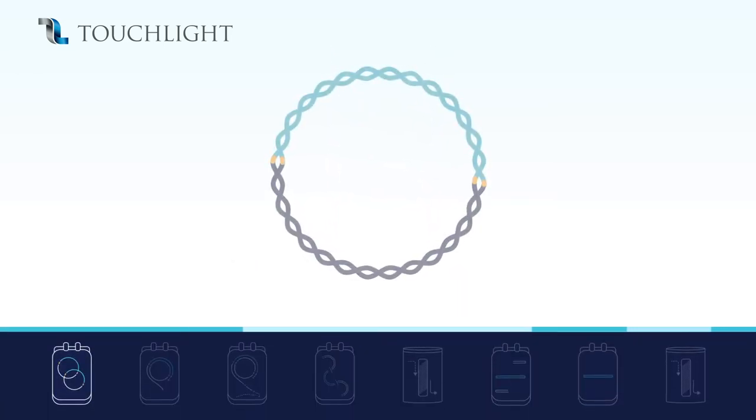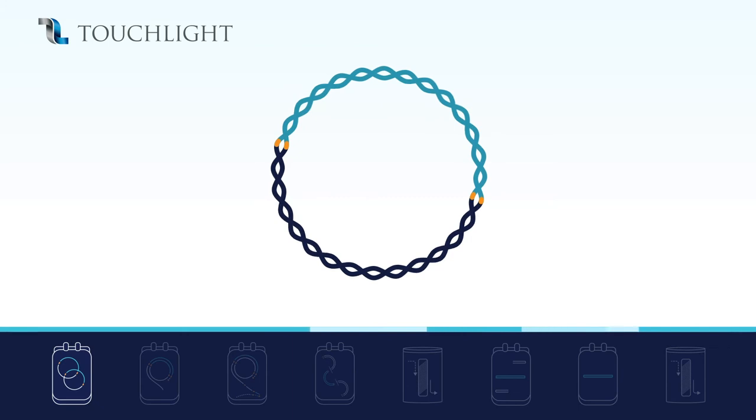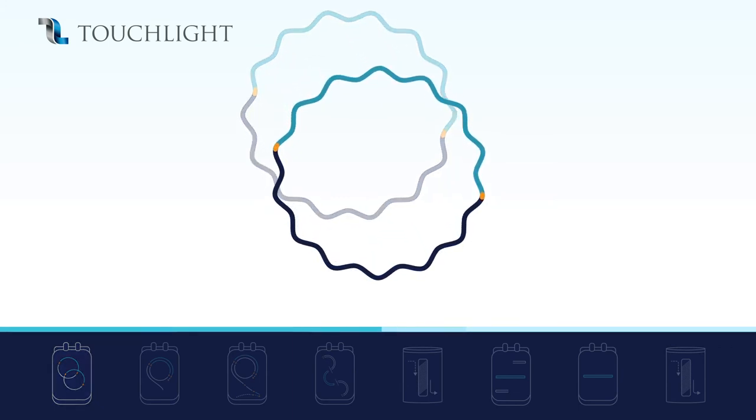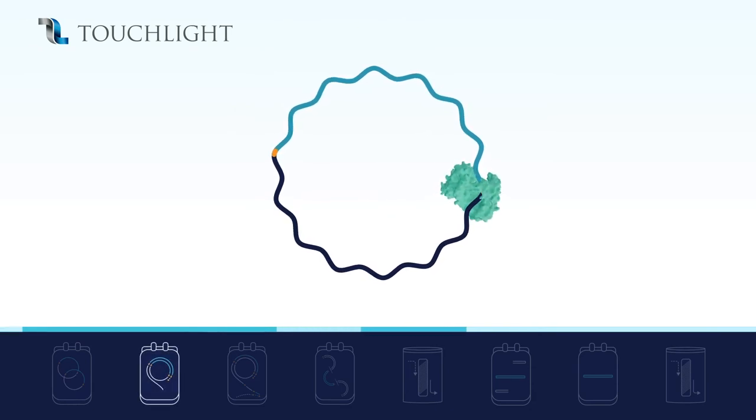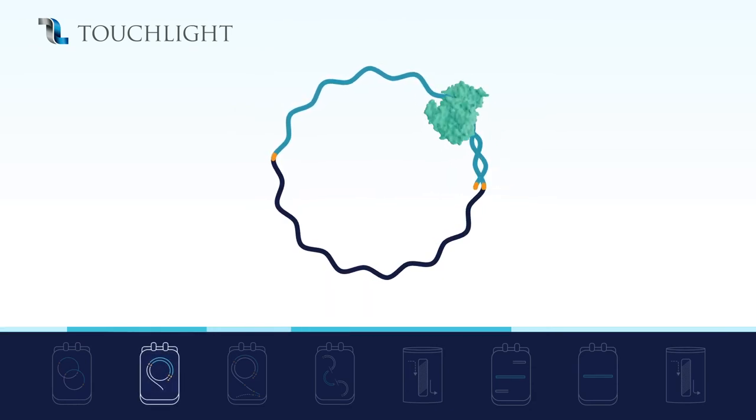dbDNA manufacture begins with a circular DNA template containing any sequence of interest. The template is denatured. Phi29 DNA polymerase is added, initiating rolling circle amplification.